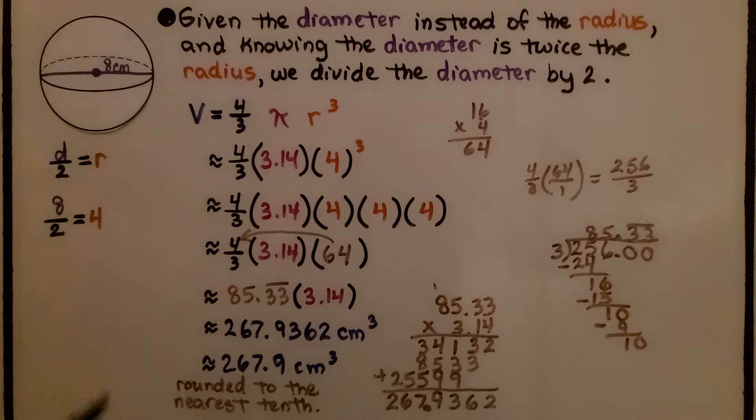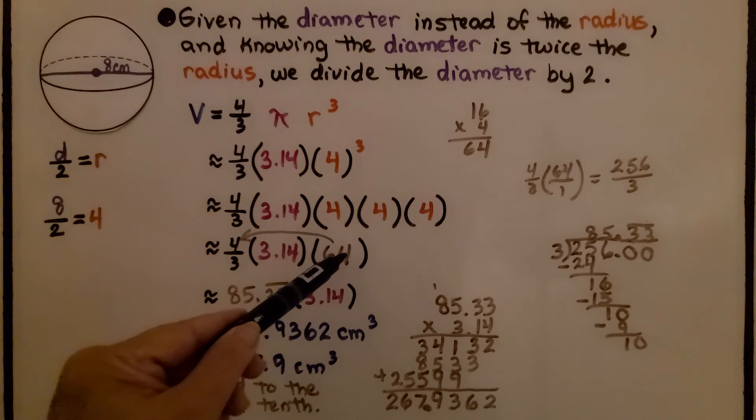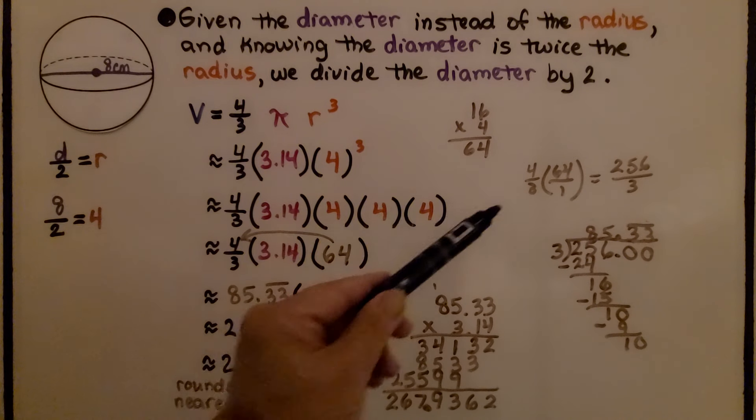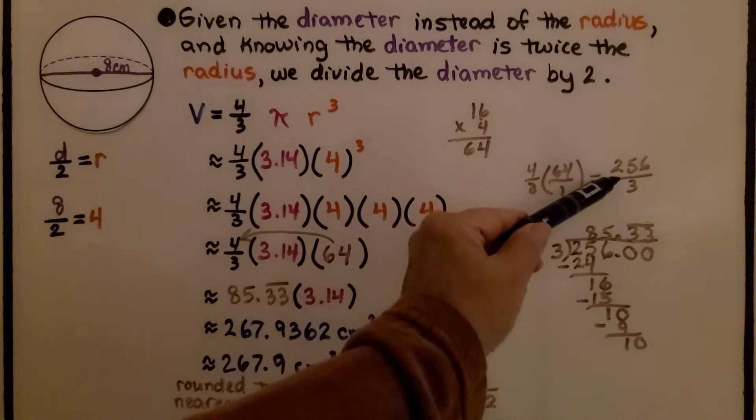We can just immediately put that 4 in for the radius. We do our math and we get 4 times 4 times 4, which is 64. We can multiply that easily to the 4 thirds by writing it over 1 as a fraction. We get 256 thirds.